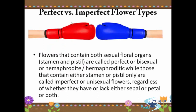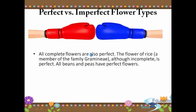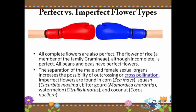So what is the difference between perfect and imperfect flower types? Flowers that contain both sexual floral organs — stamen and pistils — are called perfect, bisexual, or hermaphroditic, while those that contain either stamen or pistils only are called imperfect or unisexual flowers, regardless of whether they have or lack either sepal, petal, or both. All complete flowers are also perfect. The flower of rice, a member of the family Graminae, although incomplete, is perfect. All beans and peas have perfect flowers.